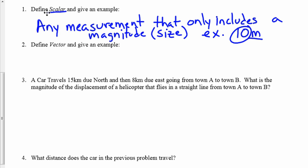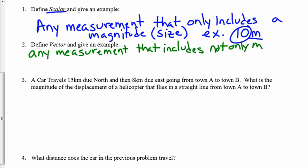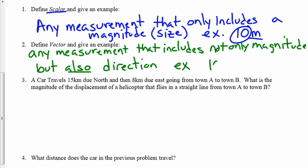Now a vector on the other hand is any measurement that includes not only magnitude, but also direction. So our example here would be ten meters towards the left.